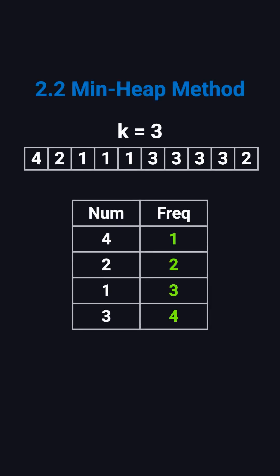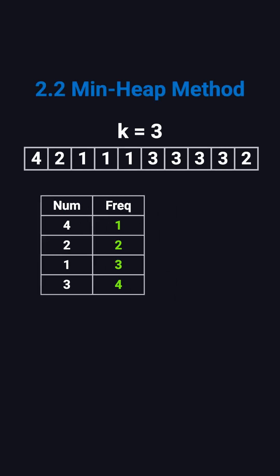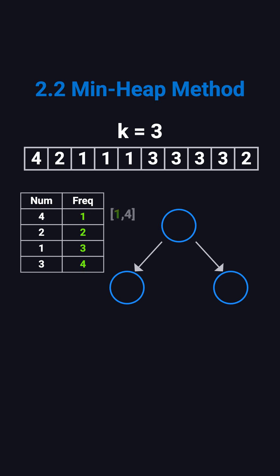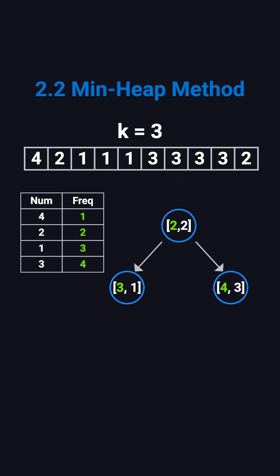A faster approach is using a min heap. We build a heap of size k that stores each number and its frequency. If the heap is full and a new number has a higher frequency, we pop the smallest one and push the new one in. The heap always keeps the top k most frequent elements. Each heap operation takes log k time, so the total complexity is O(n log k), much faster when k is small compared to n.